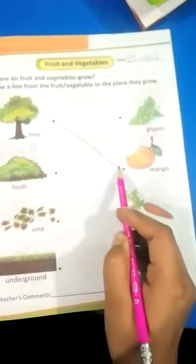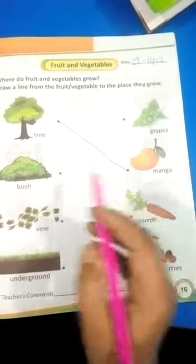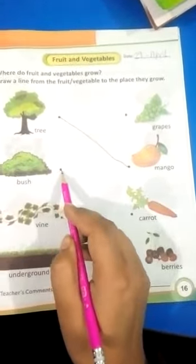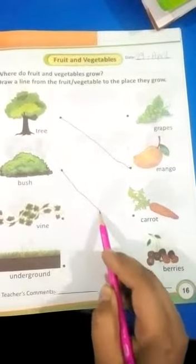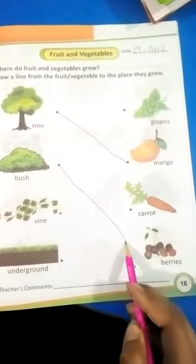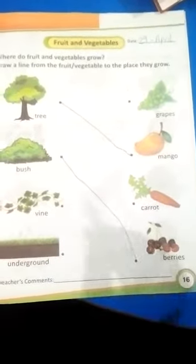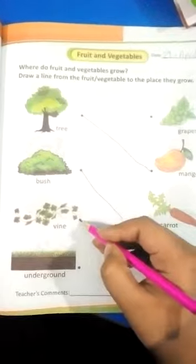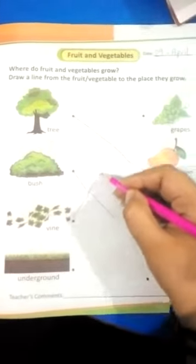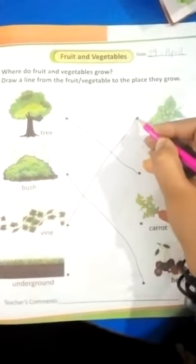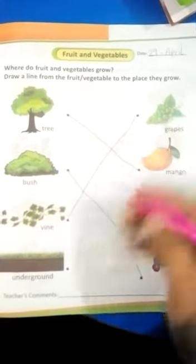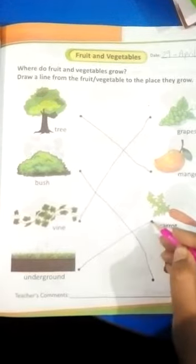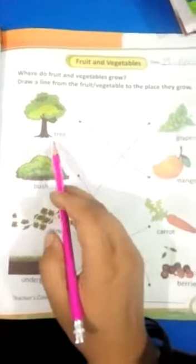Mango. Bush. Berries. Vine. Grapes. Underground. Carrot. Tree.